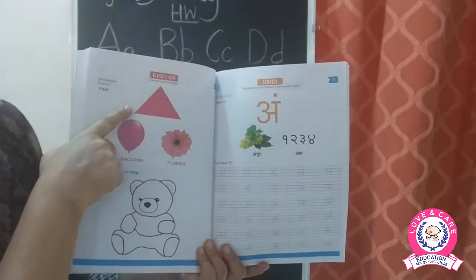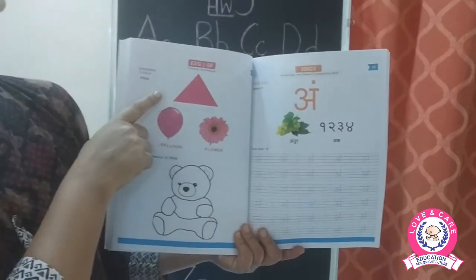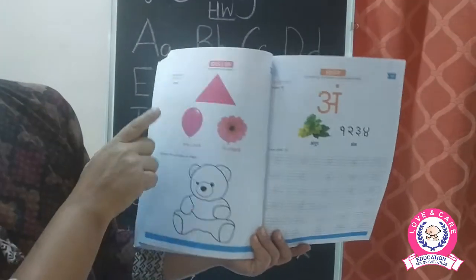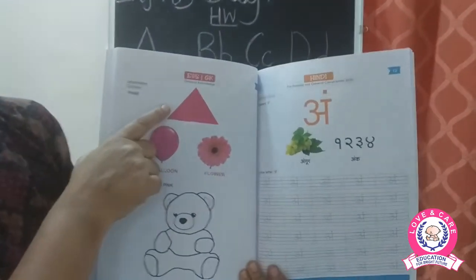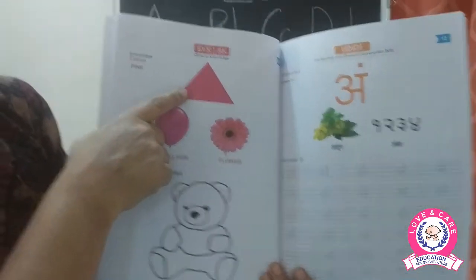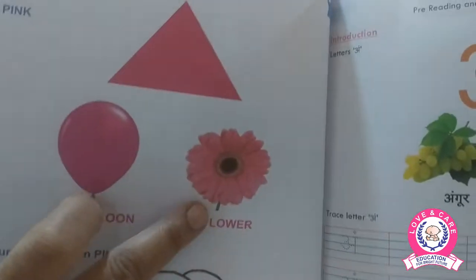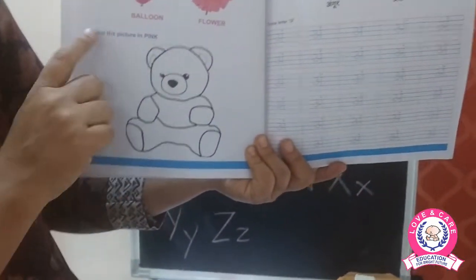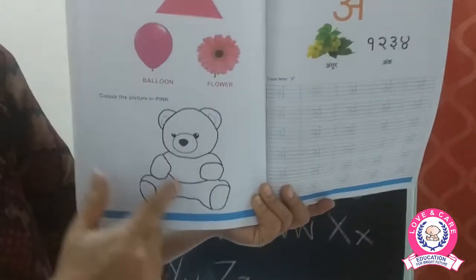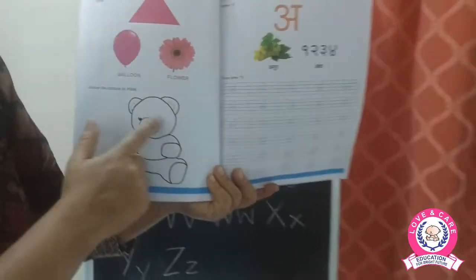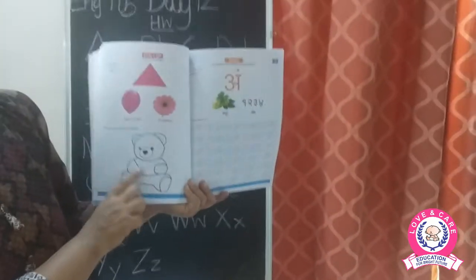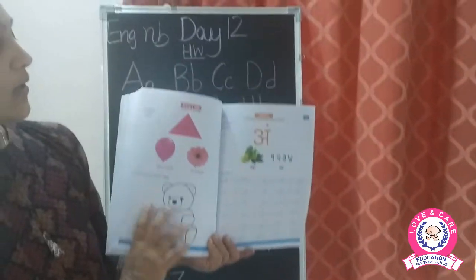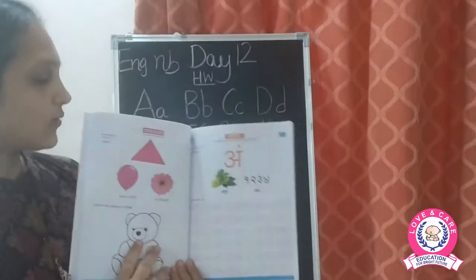The new color is pink. Here you can see three things in pink: a triangle, a balloon, and a flower. Below, you are given a teddy bear — you have to color it with the pink color.